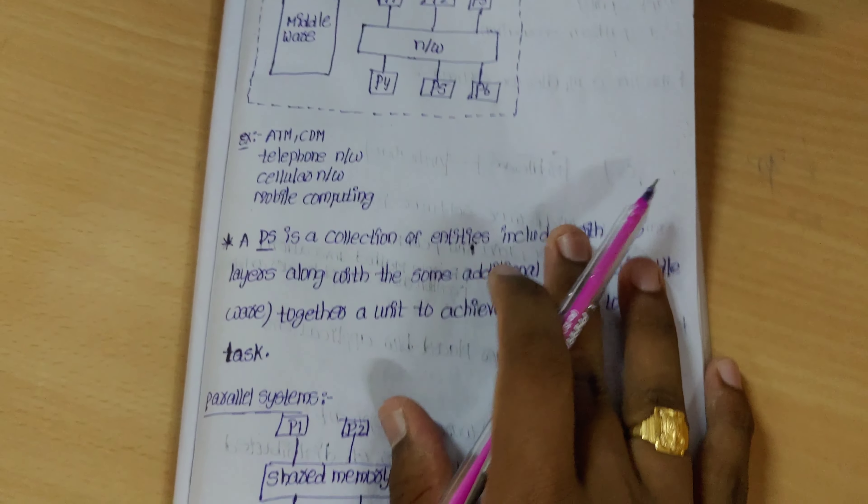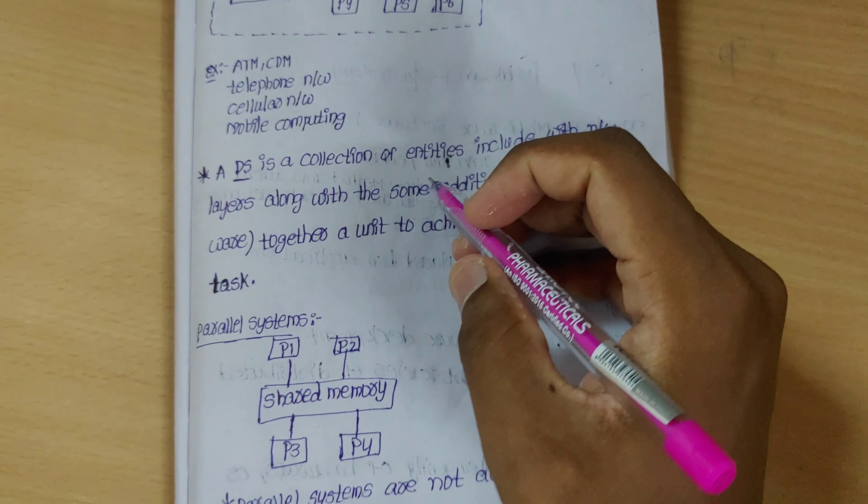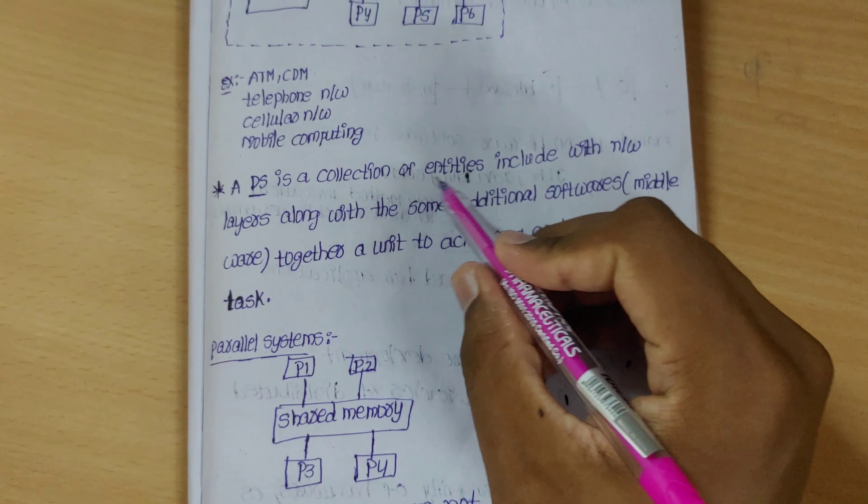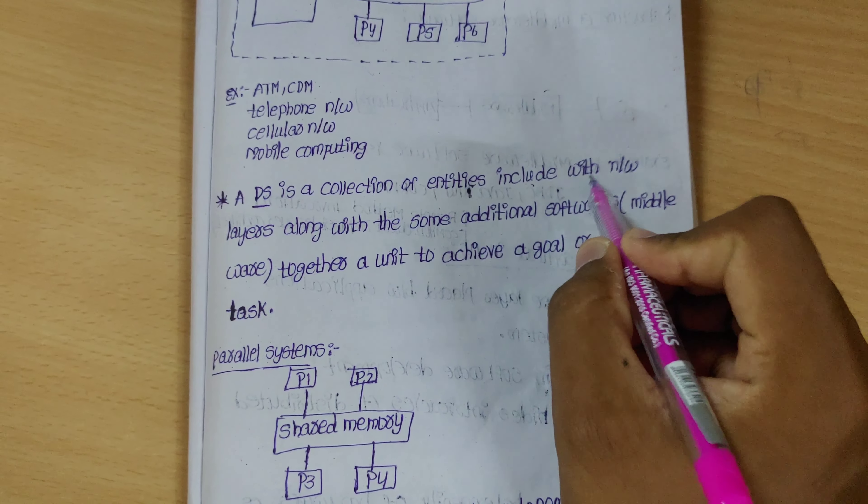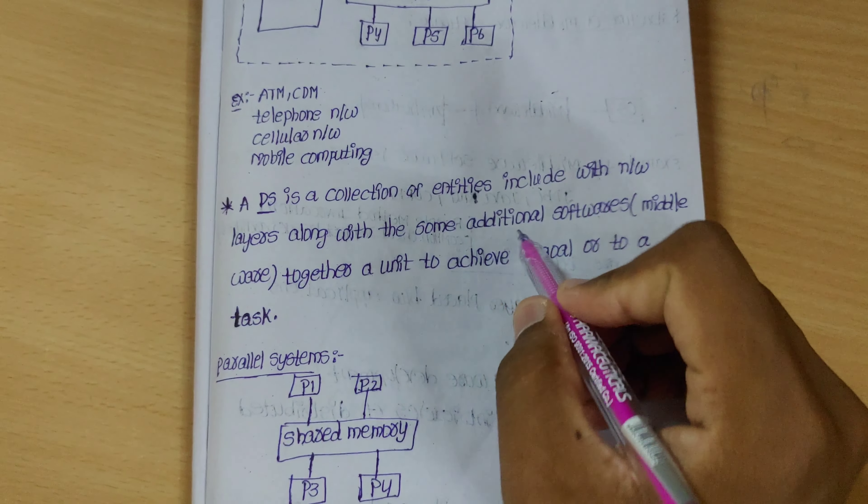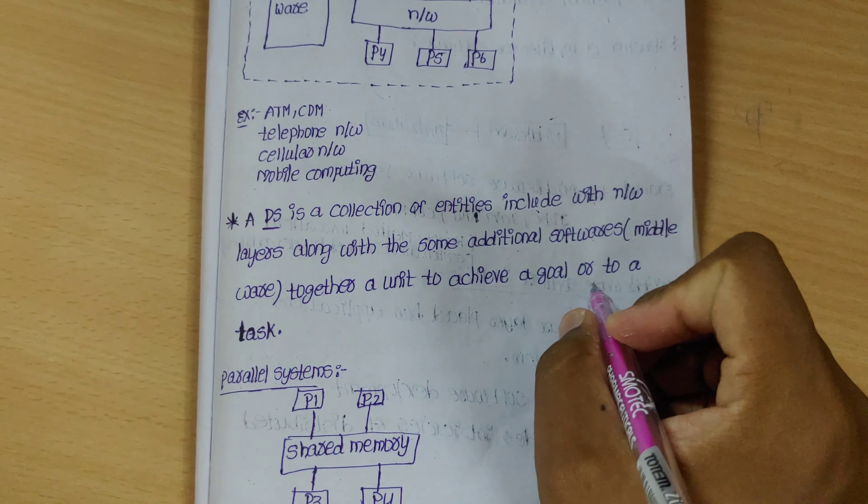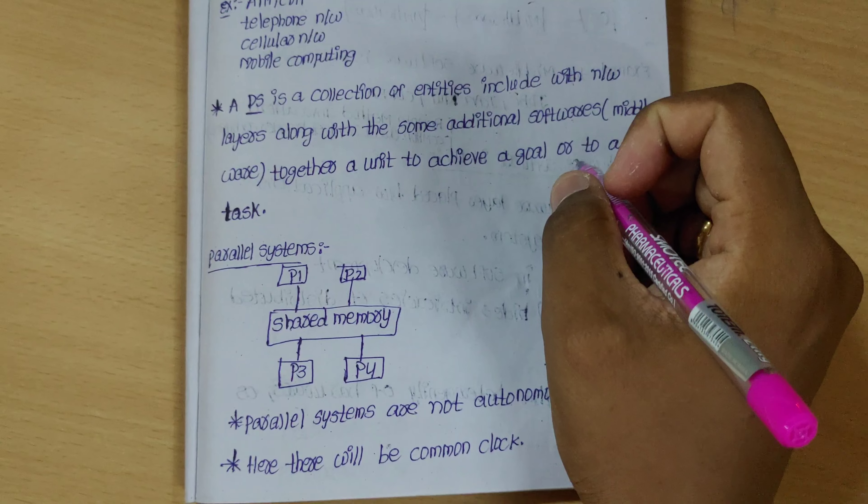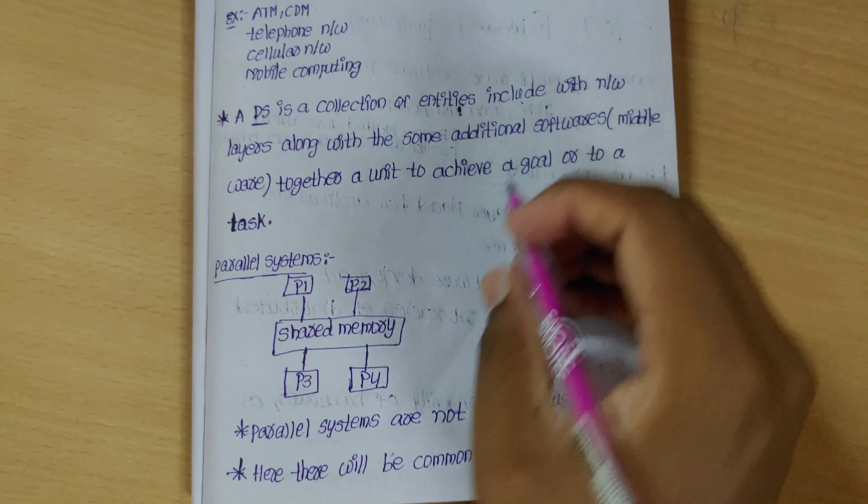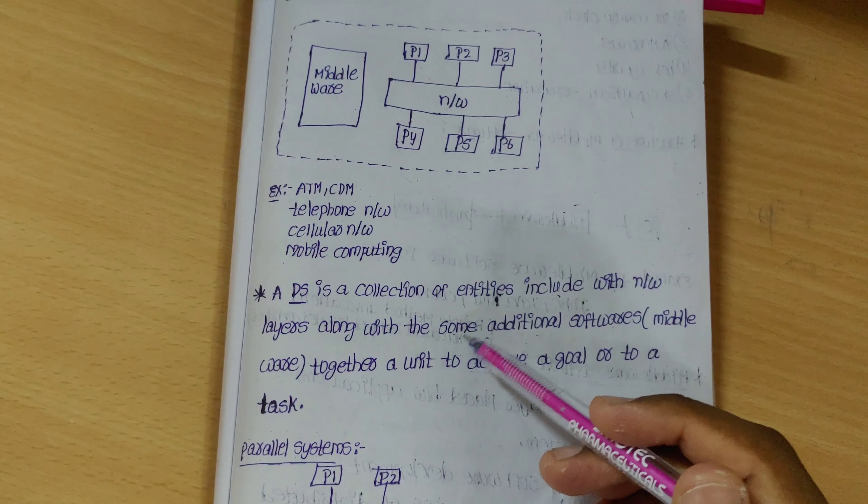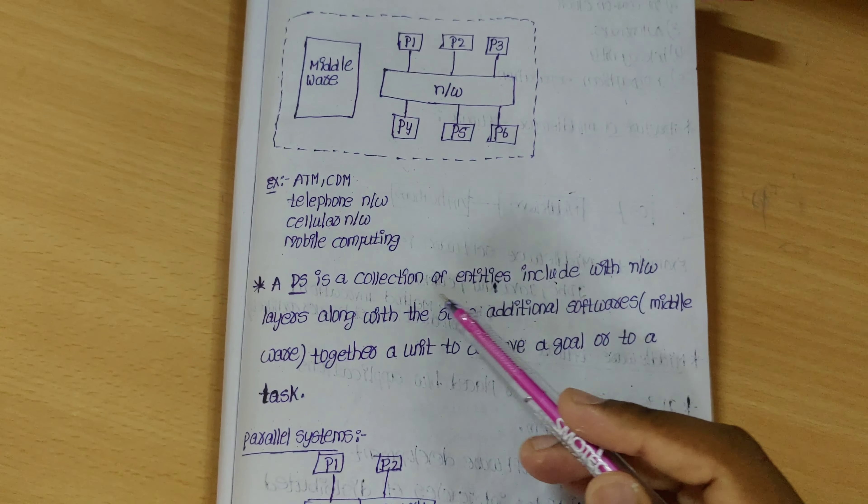So many can attend middleware. What is middleware? Middleware is software. Network and network key network nodes. EDS is like ATMS or CDMS. So EDS is a collection of entities included with network layers along with some additional software. This additional software shared with the network - that's middleware. Together they allow you to finish a program or task. That's what we call EDS.